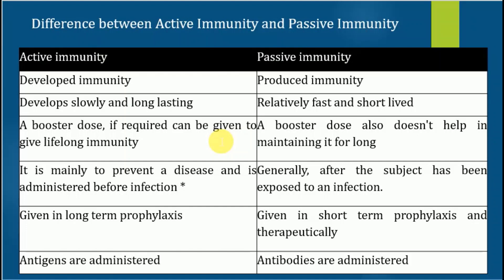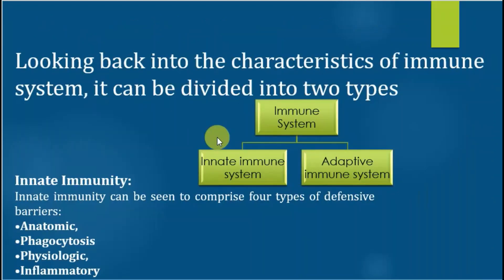Another difference: active immunity is mainly to prevent disease and is administered before the infection — it is a preventive measure given in long-term prophylaxis. Passive immunity is generally given after the infection has occurred — it is for treatment purposes and is given in short-term prophylaxis and therapeutically. In active immunity we inject the antigen, while in passive immunity we supply the antibody. This is about the classification of immunity. The types of immune system will be discussed in the next lecture.